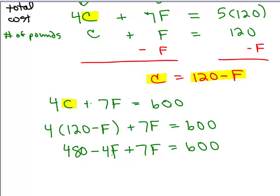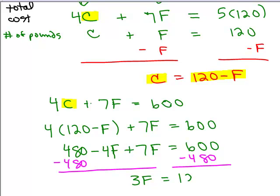Let's do the distributive property here. 4 times 120 is 480 minus 4 times F is 4F and then I have plus the 7F equals 600. So I've got the two terms with F so I'm going to combine like terms here and at the same time I'm going to subtract 480 from both sides. So that gives me 3F, because negative 4 plus 7 is 3, equals 120 and if you divide by 3 we get 40.